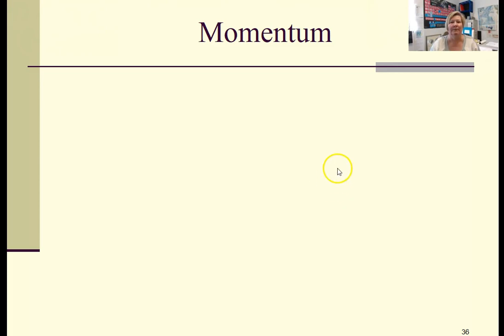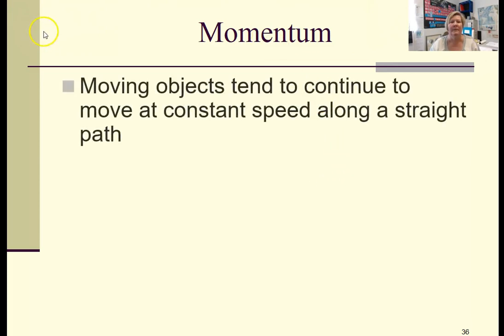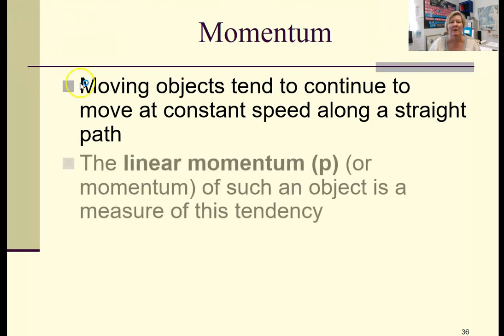So if you think about a moving object and Newton's first law of motion, something that can tends to continue to move at a constant speed, or what we call uniform motion along a straight path. So that moving object, a measure of that object's tendency to move at a constant speed along a straight path, we're going to call linear momentum or we'll just call it momentum.